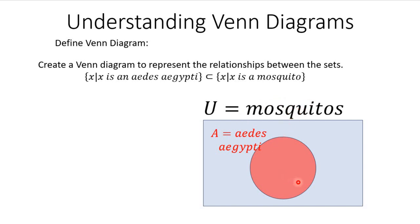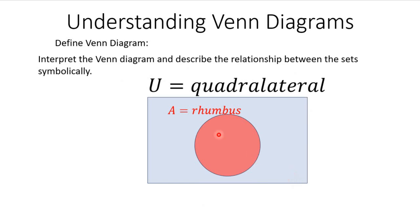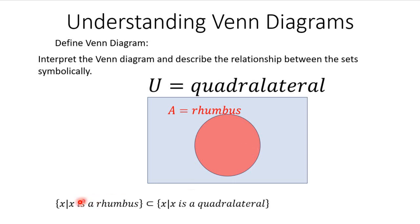Now let's go back in the other direction. In the Venn diagram below, it describes the relationship between two sets. The universal set is the set of all quadrilaterals, and the subset of that is the set of all rhombuses. So, the set of rhombuses is a proper subset of the set of quadrilaterals. We write that as: {x such that x is a rhombus} ⊂ {x such that x is a quadrilateral}.